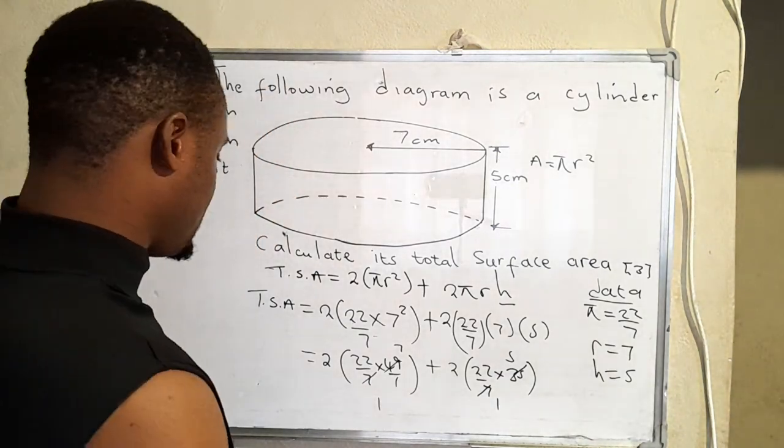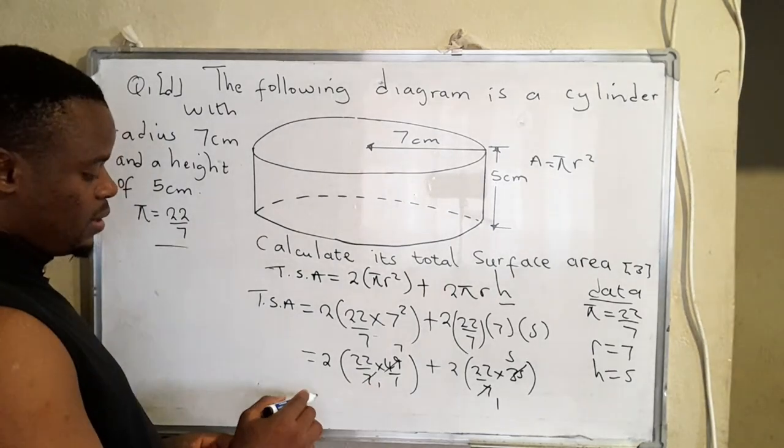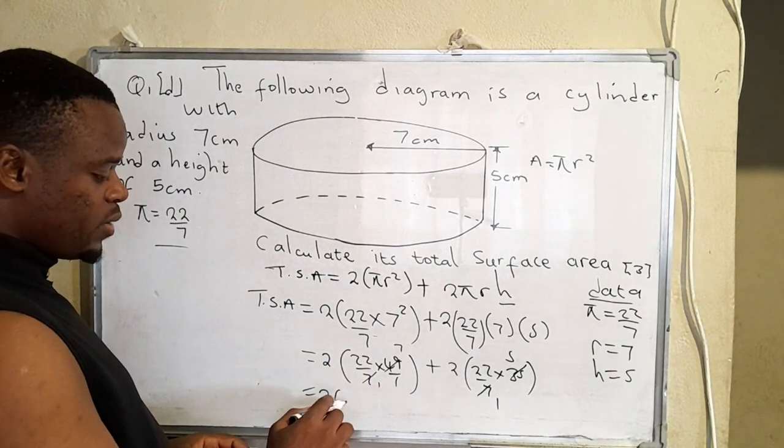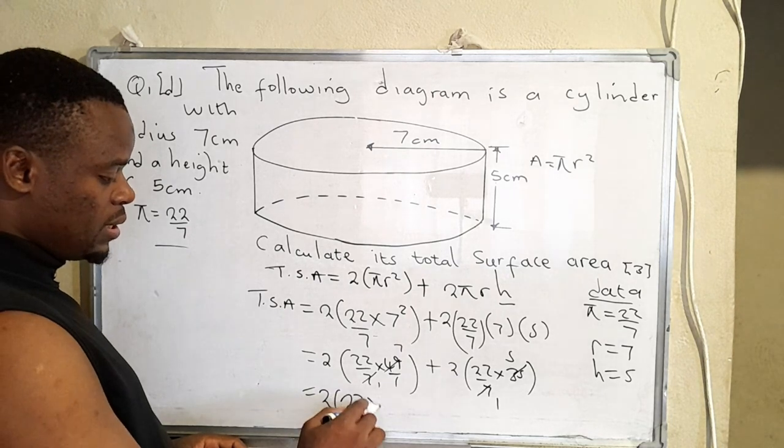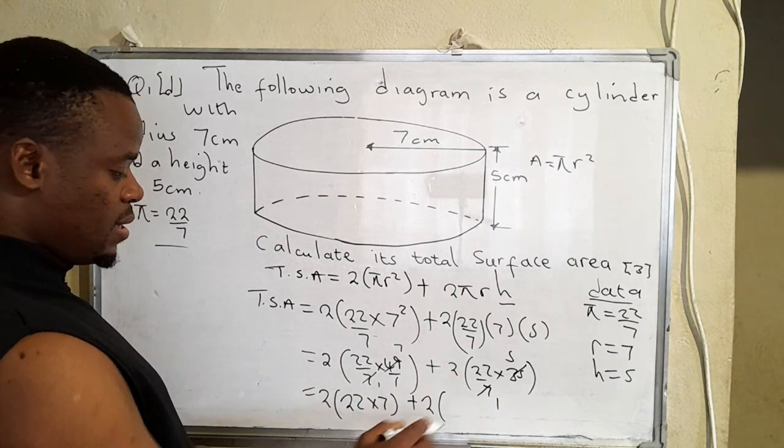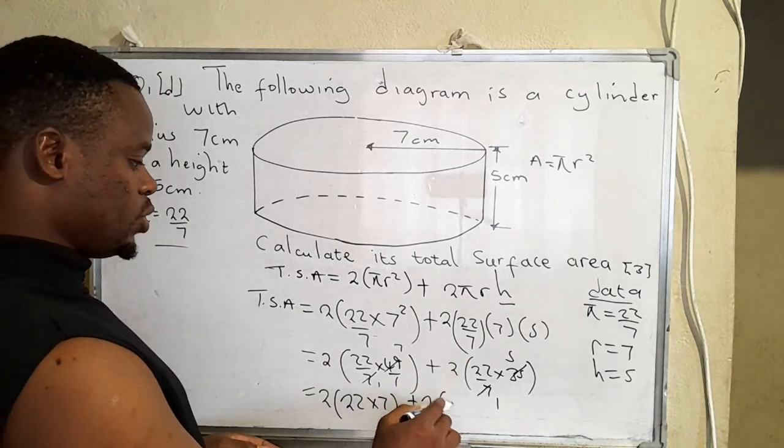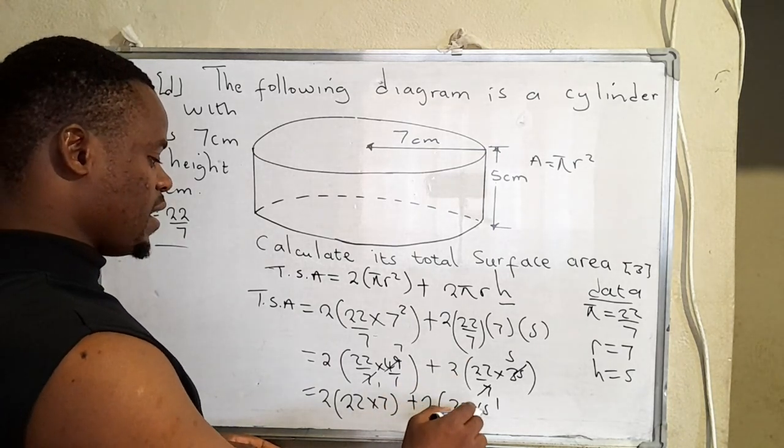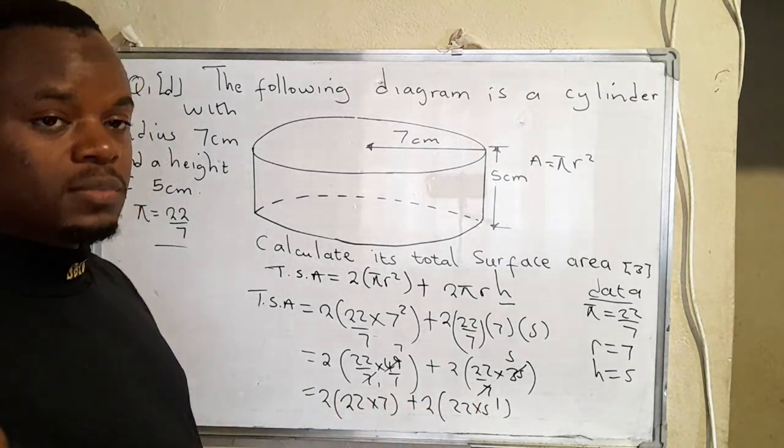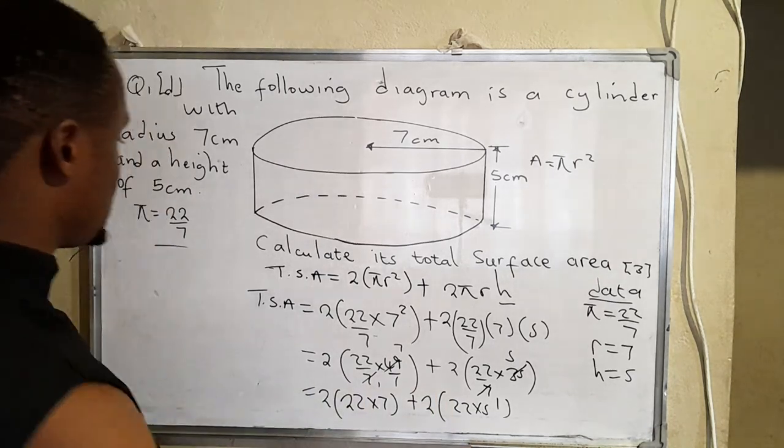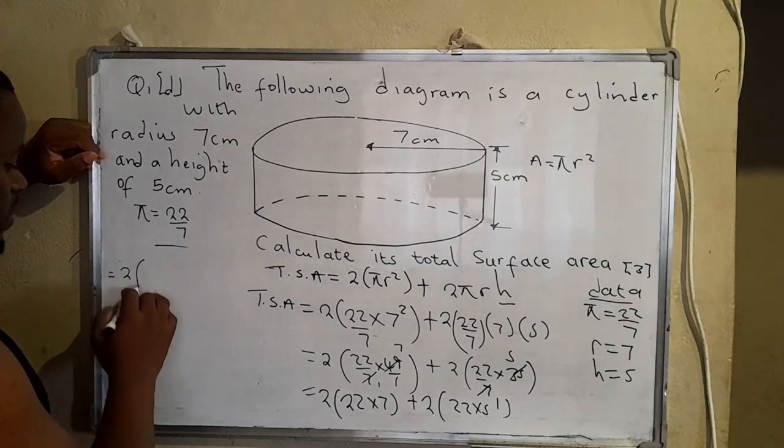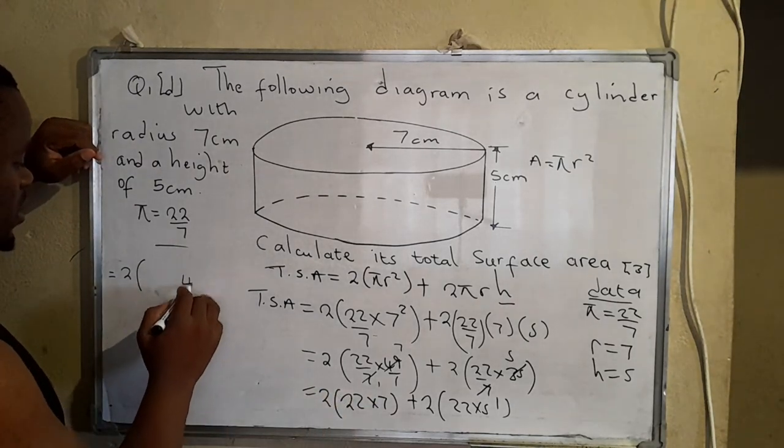So now what we have is 2, then on the inside we have 22 times 7, then plus 2 on the outside, then we get 22 times 5. So we execute what's on the inside of the brackets first. So let me write that out here. So that would be 2, 7 times 2, that would be 14.